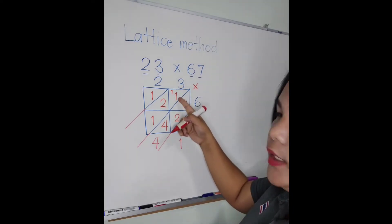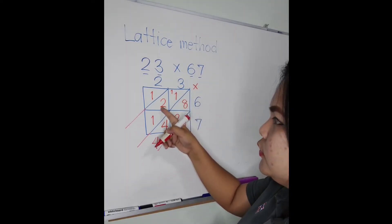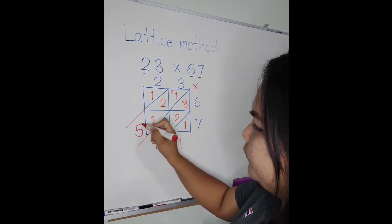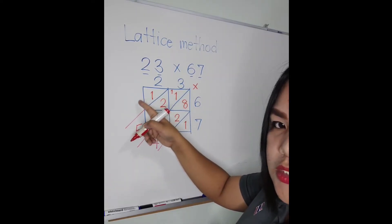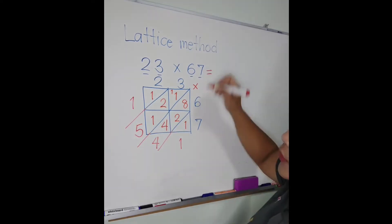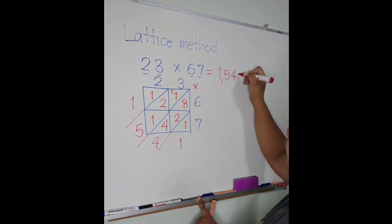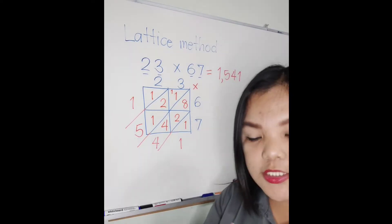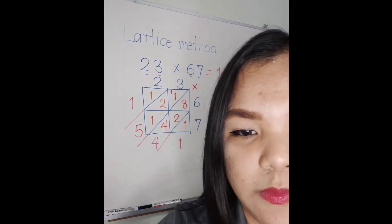1 plus 1, 2 plus 2, 4 plus 1, 5. And then we still have 1 here, so just put 1 here. So the answer is 1541.